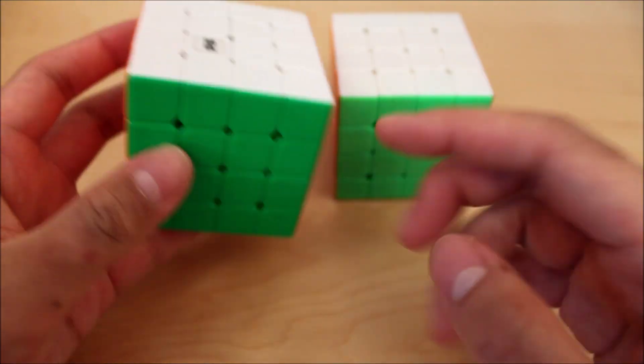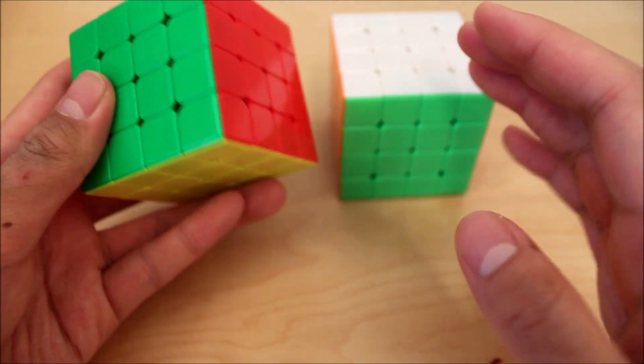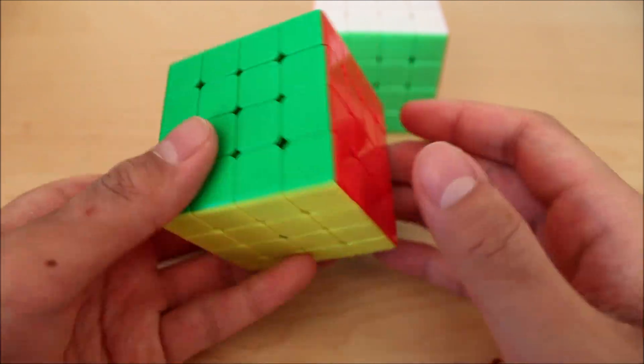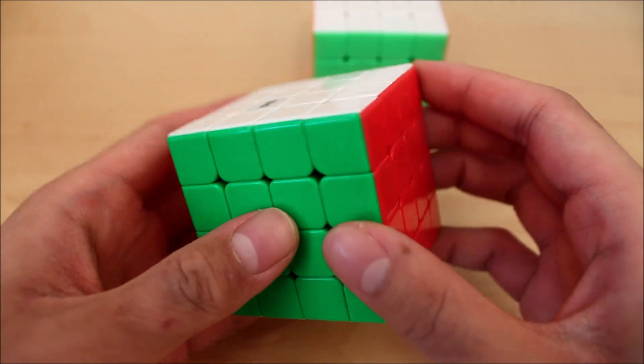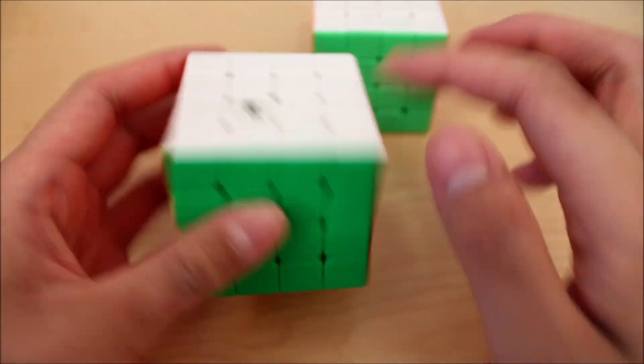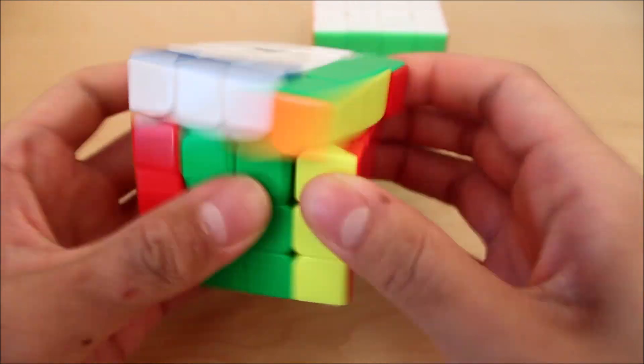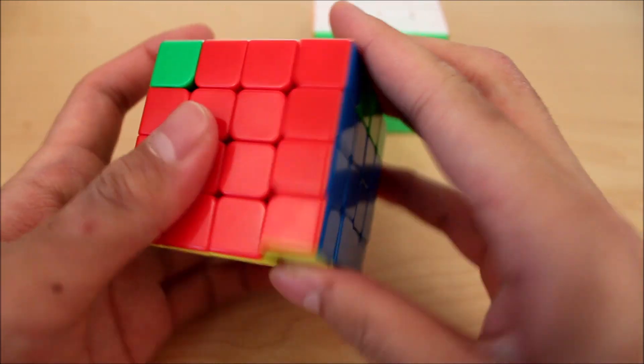So my main, as of right now, is actually going to be the WR-M, and that's mostly because of the size, and here's why. The outer layers being a bit smaller actually helps a lot with the 3x3 stage, so I get to do a lot of nice finger tricks that are a bit easier on this cube than this. So like, this kind of finger trick, like on the J-perm. It's a bit easier here.